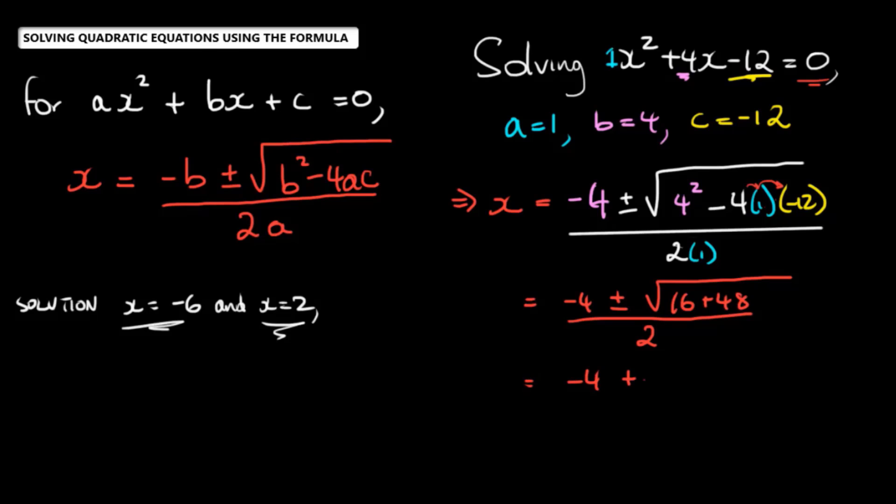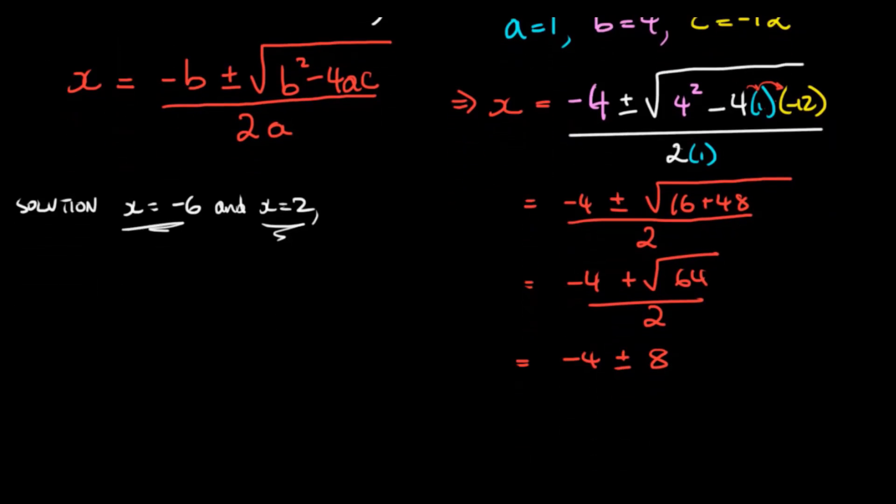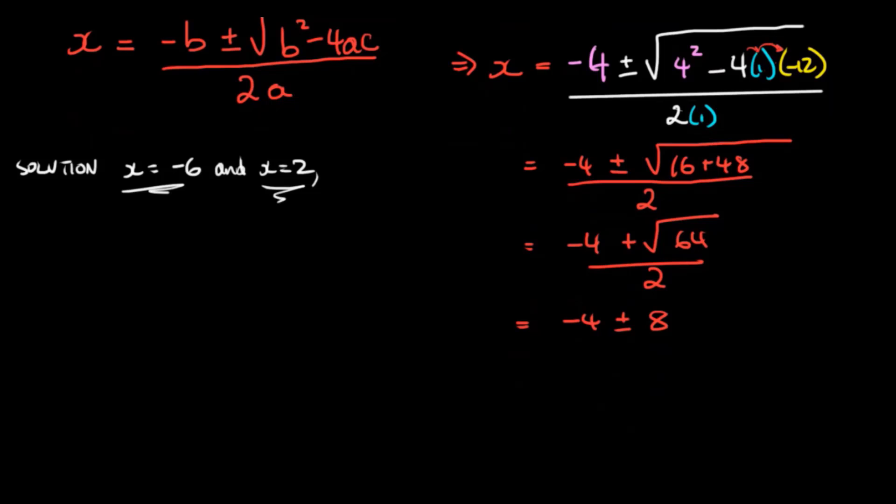16 plus 48 is 64. And the square root of 64 is eight. So x is going to be equal to negative four plus or minus eight, all over two.